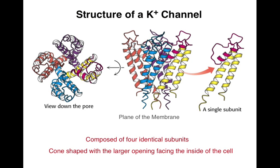This is the structure of a potassium channel. It contains four subunits. So if you're looking down into the channel, the potassium ion would flow through here and these are the four subunits. If you're looking from the side, from the plane of the membrane, here are the four subunits. It's sort of cone-shaped and the larger opening faces towards the inside of the cell. This is a single subunit and you can see the alpha helices in this single subunit.